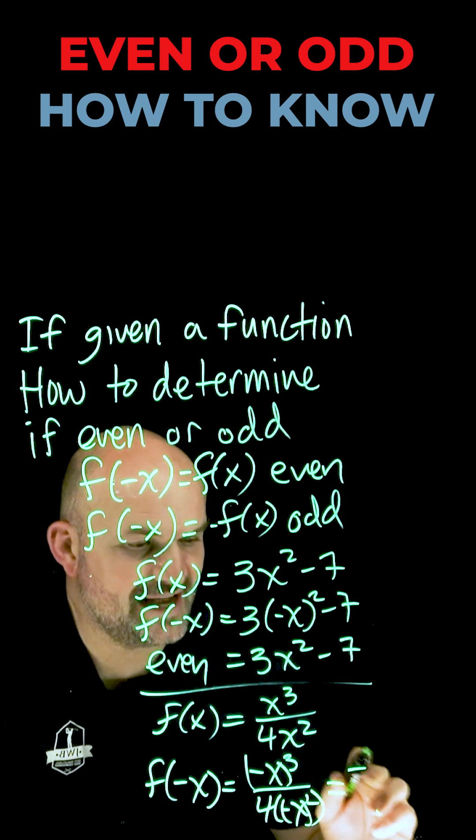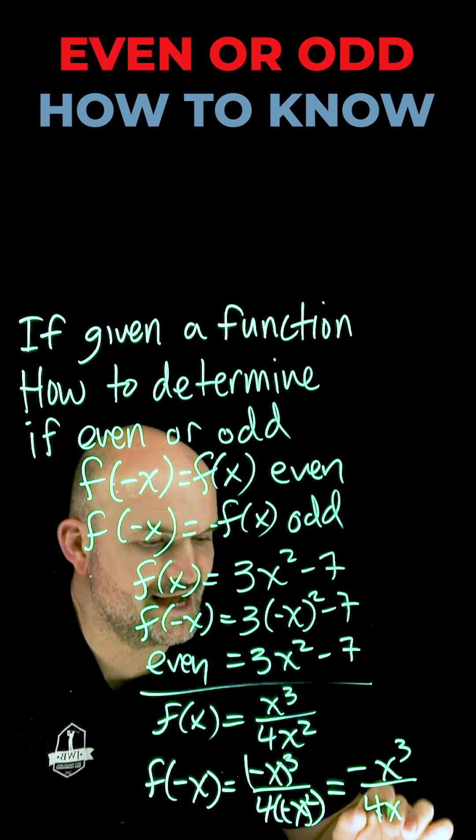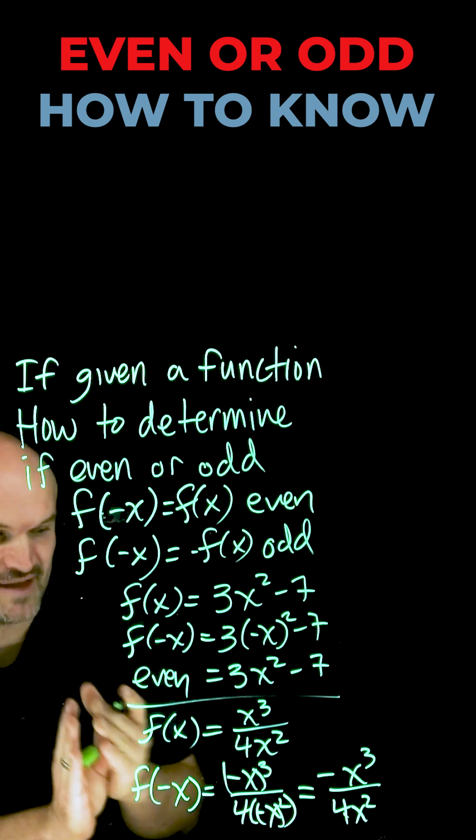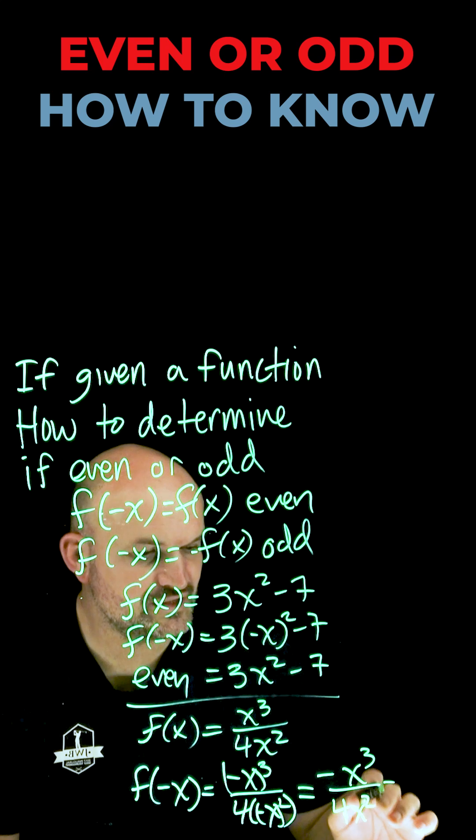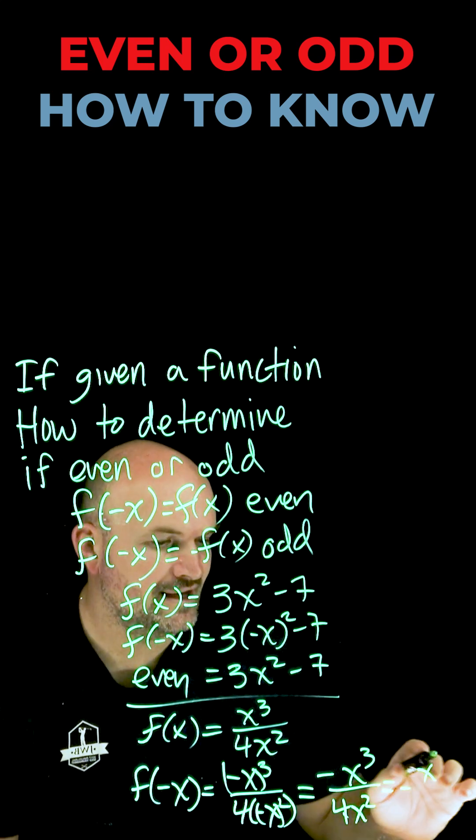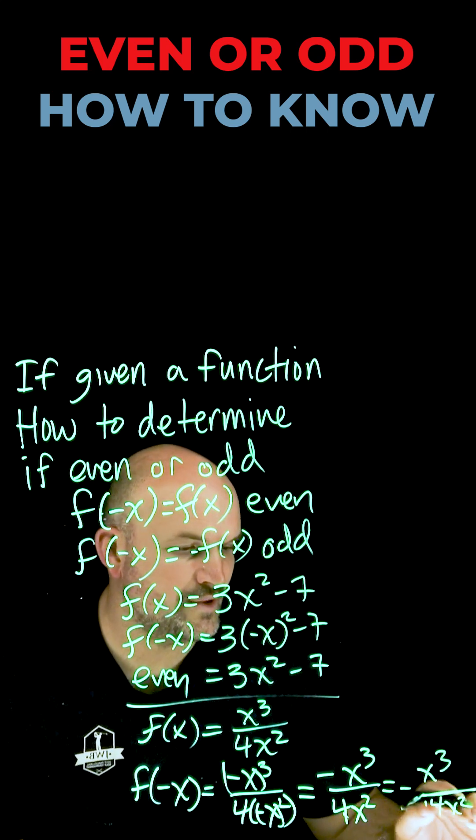And then negative x³ is going to give me negative x³. So therefore I have negative x³ all over 4x², which I can factor out that negative in front, which is just going to leave me with negative x³ all over 4x².